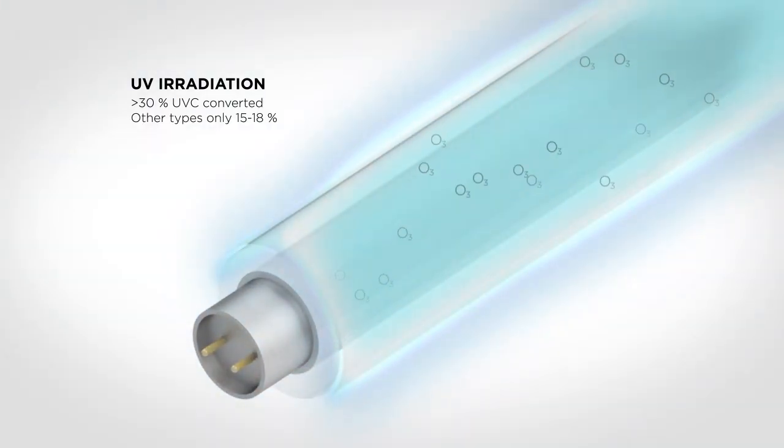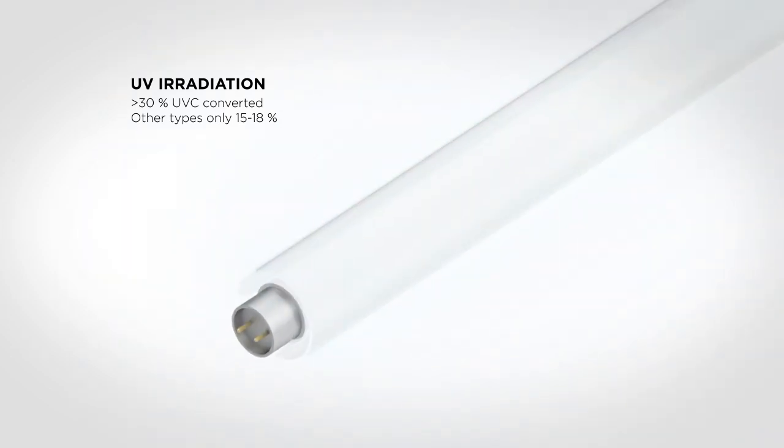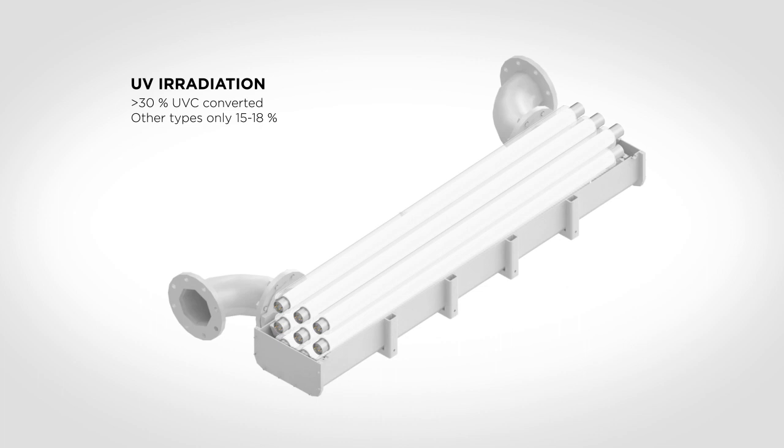Other types of UV lamps convert typically 15 to 18% of the energy into UV-C. UV units are the core component of the system. Each unit is capable of treating 100 cubic meters of ballast water per hour.